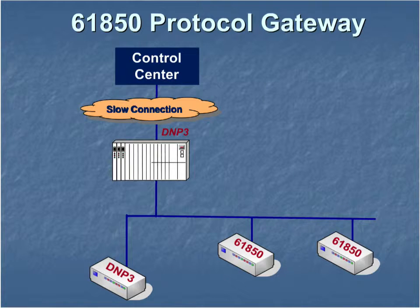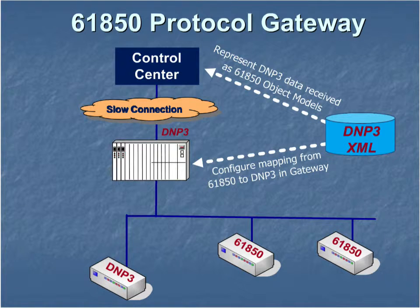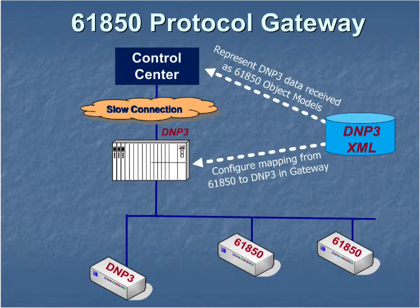The DNP3 XML device profile configures the mapping from IEC 61850 to DNP3 in the substation RTU. This same DNP3 XML device profile can be used by the control center to represent the data received via DNP3 as an IEC 61850 object model to the user or other applications running in the control center.